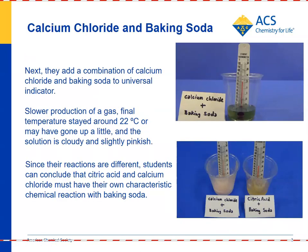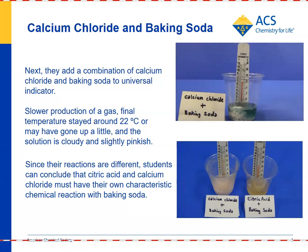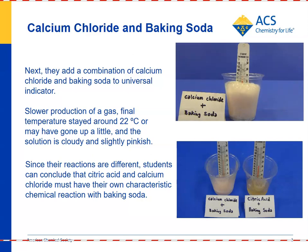Next, the students use the same amount of indicator solution, put a thermometer in, and this time they add calcium chloride and baking soda. Here, you can see that the reaction is more gradual. The change in color doesn't go as pink as it did with the citric acid first, and the bubbling, or production of a gas, happens more slowly.